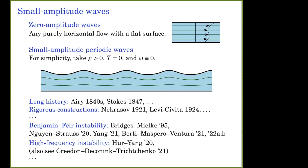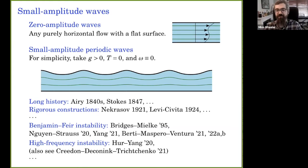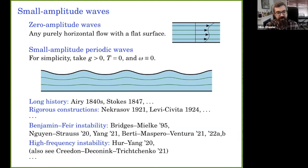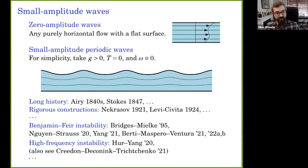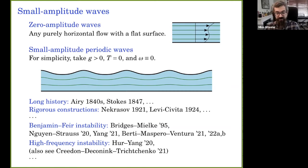To clarify: κ in the dynamic boundary condition is the mean curvature of the surface, and T·κ is the surface tension term. For the bifurcation parameter in the small-amplitude periodic wave construction, one common choice is to fix the period and use the wave speed, or use the difference between the stream function constants at the boundaries, or even the Bernoulli constant. You also could use the period itself as a parameter, as some recent preprints on global bifurcation do.